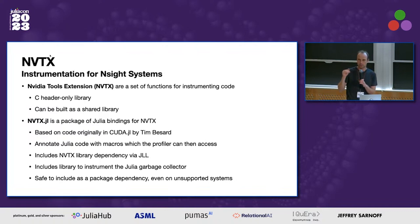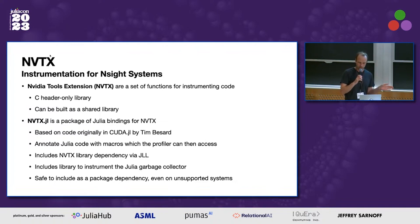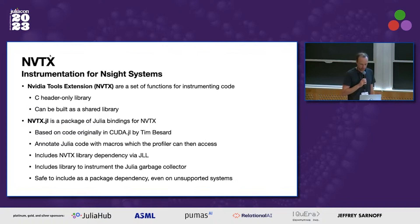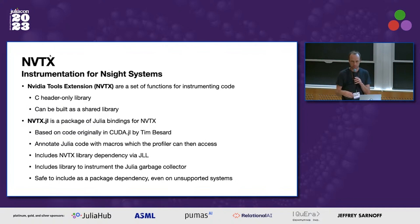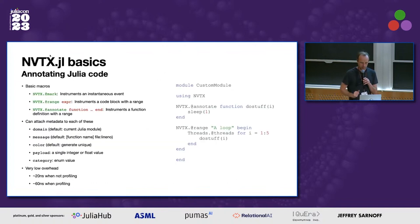The main idea is that it provides a very high-level macro that you can annotate your code with, which the profiler can then access. We bundle a JLL with it as well, so you don't actually have to download it — it's all included. It also includes a small hook to instrument the Julia garbage collector, which is very handy. And you can include it as a package dependency safely, even on systems where the profiler is not available, since most operations become no-ops in that case.